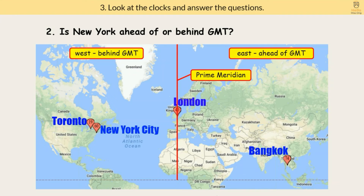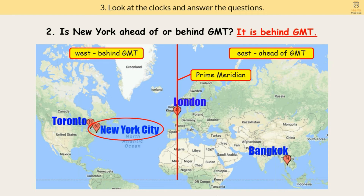Question 2: Is New York ahead of or behind GMT? New York is located west of the prime meridian, so the answer is behind GMT.